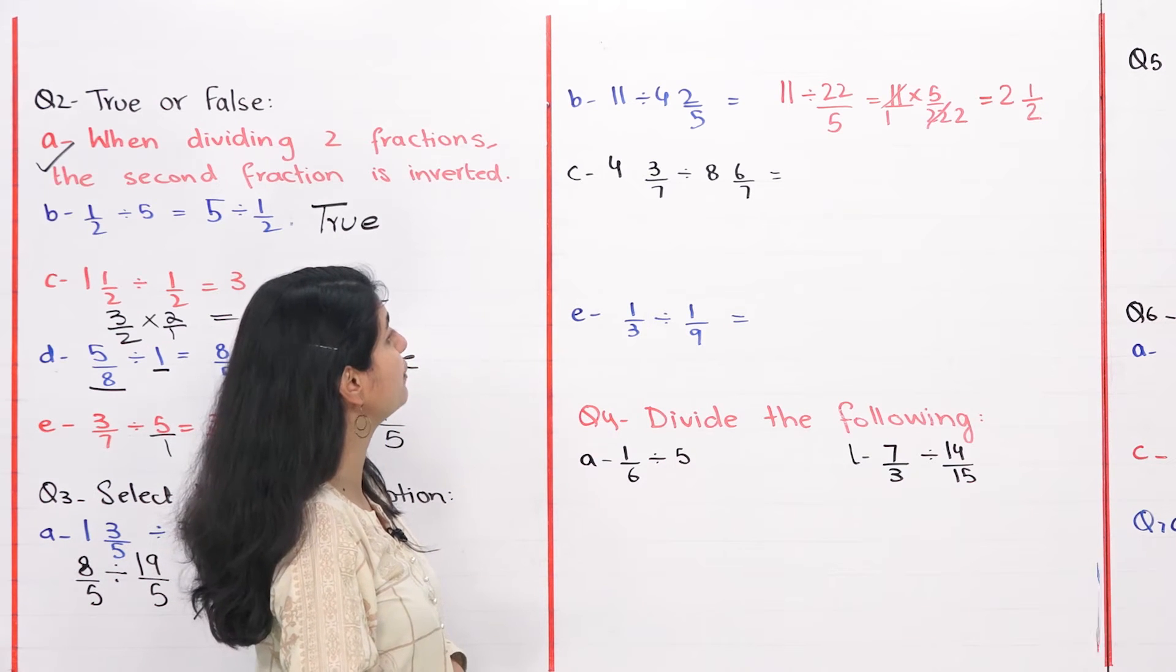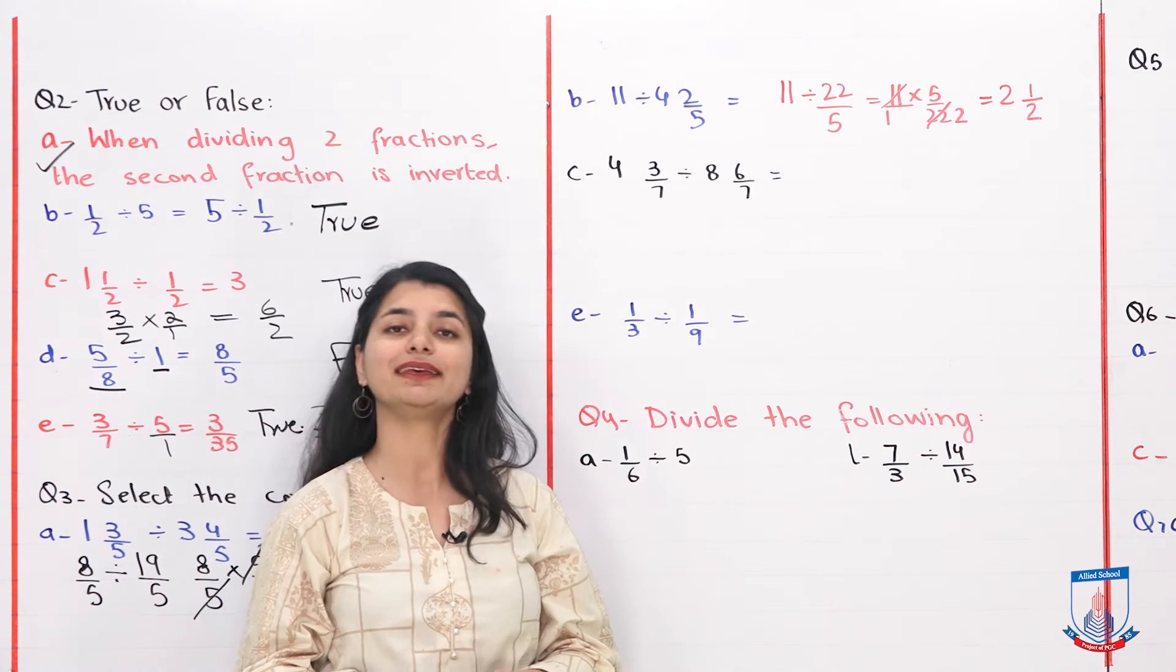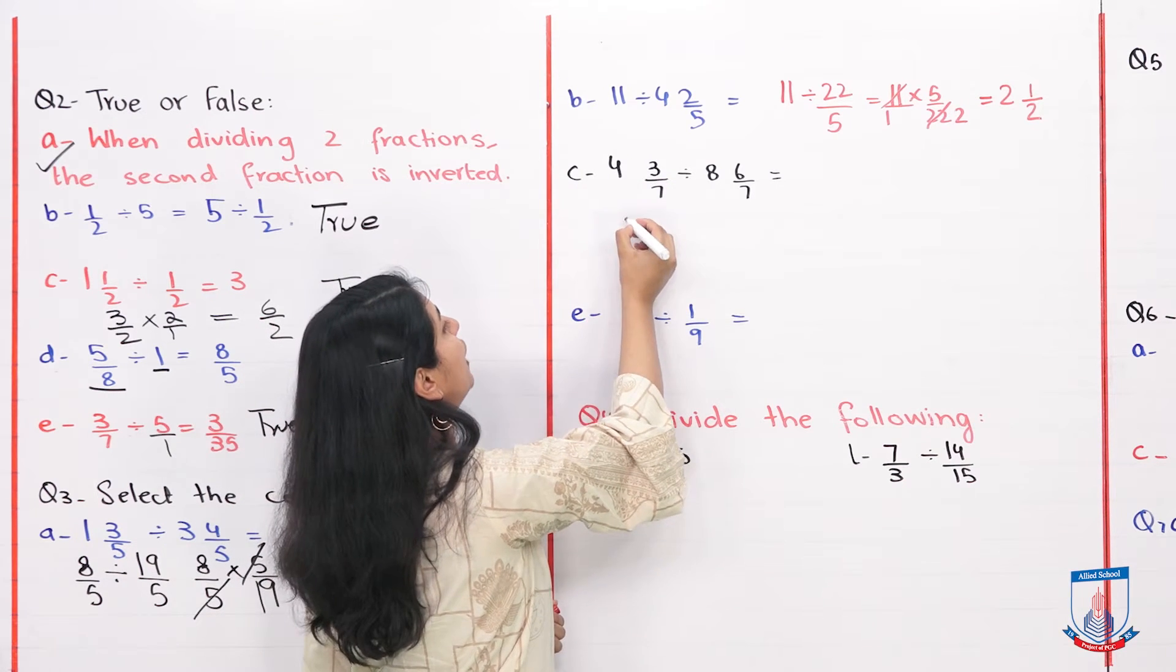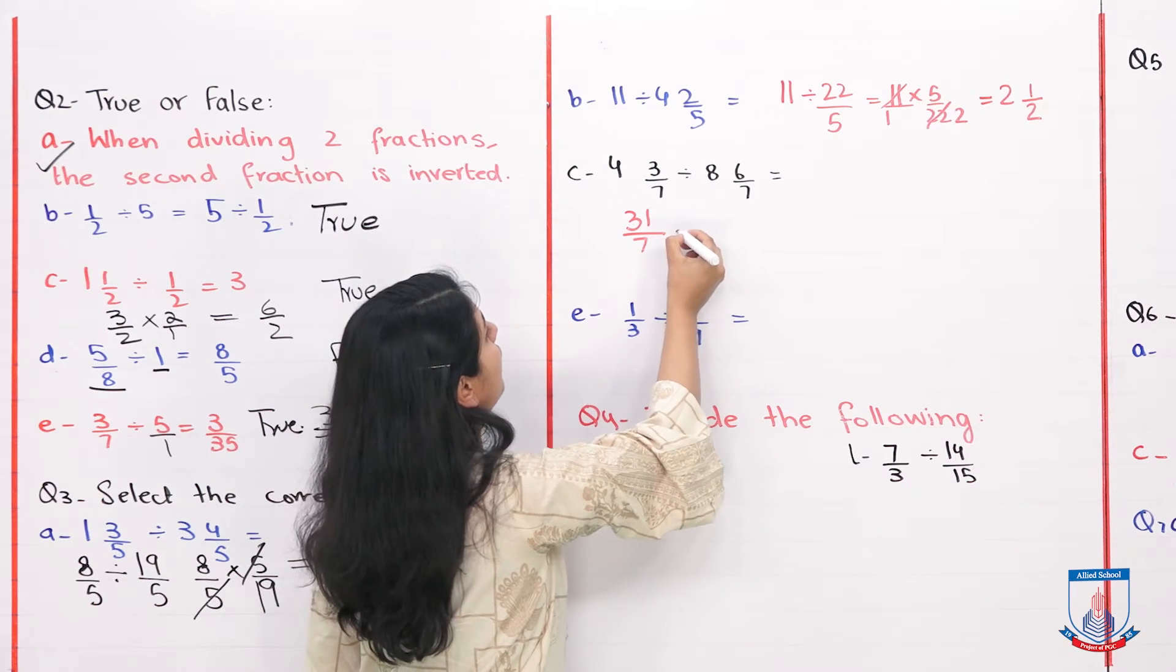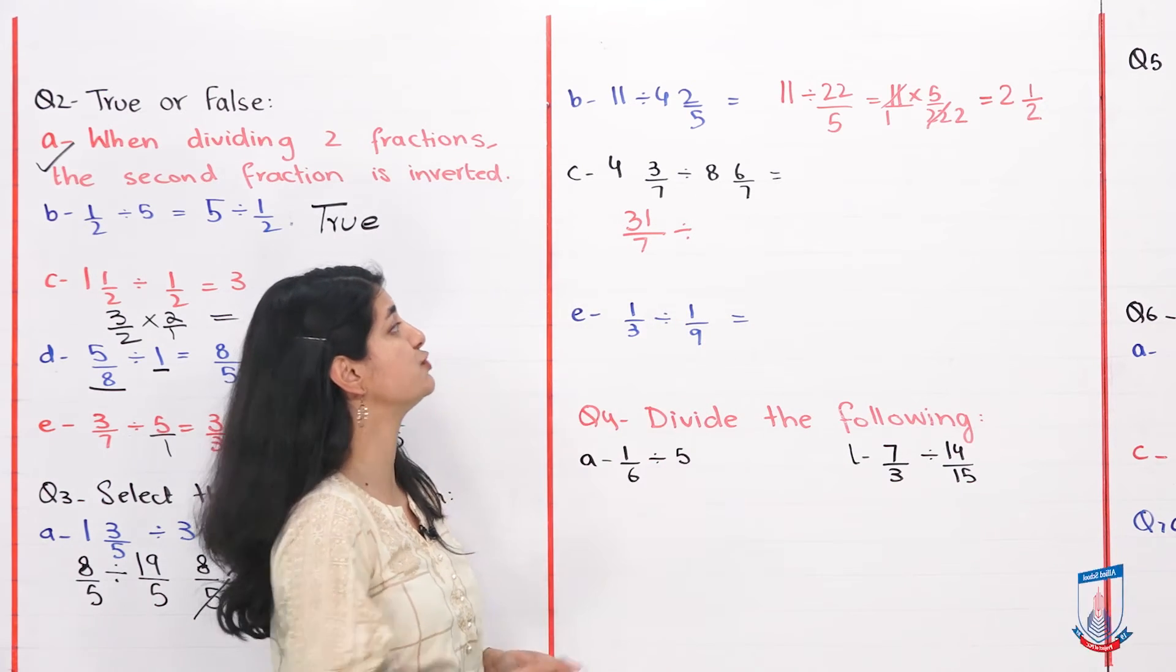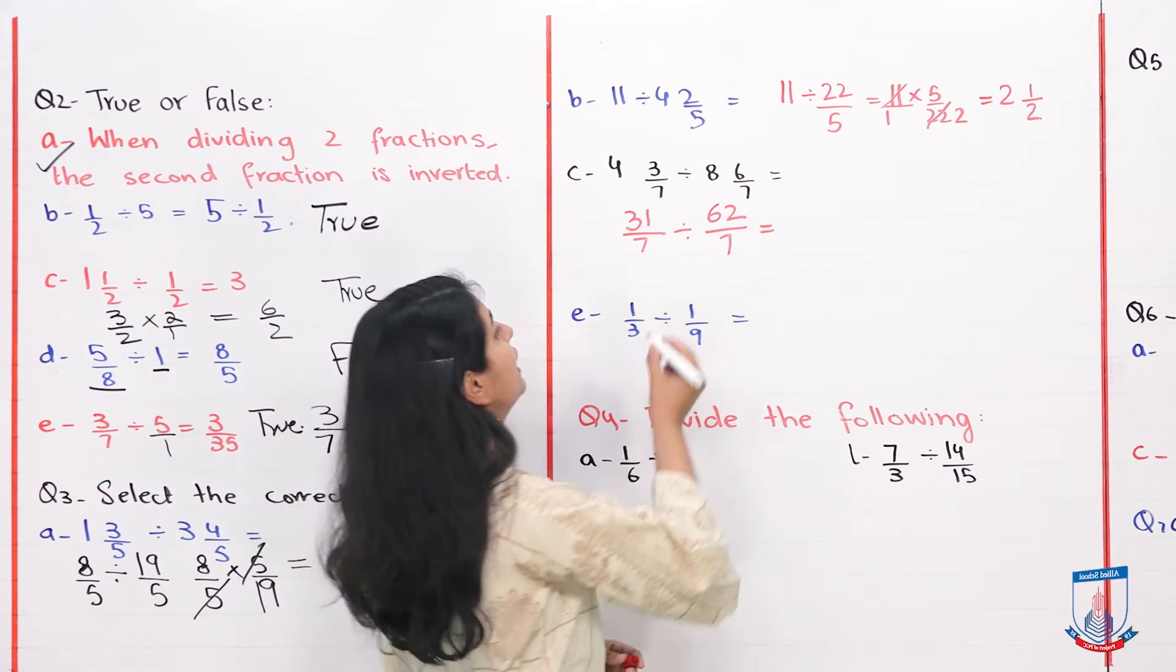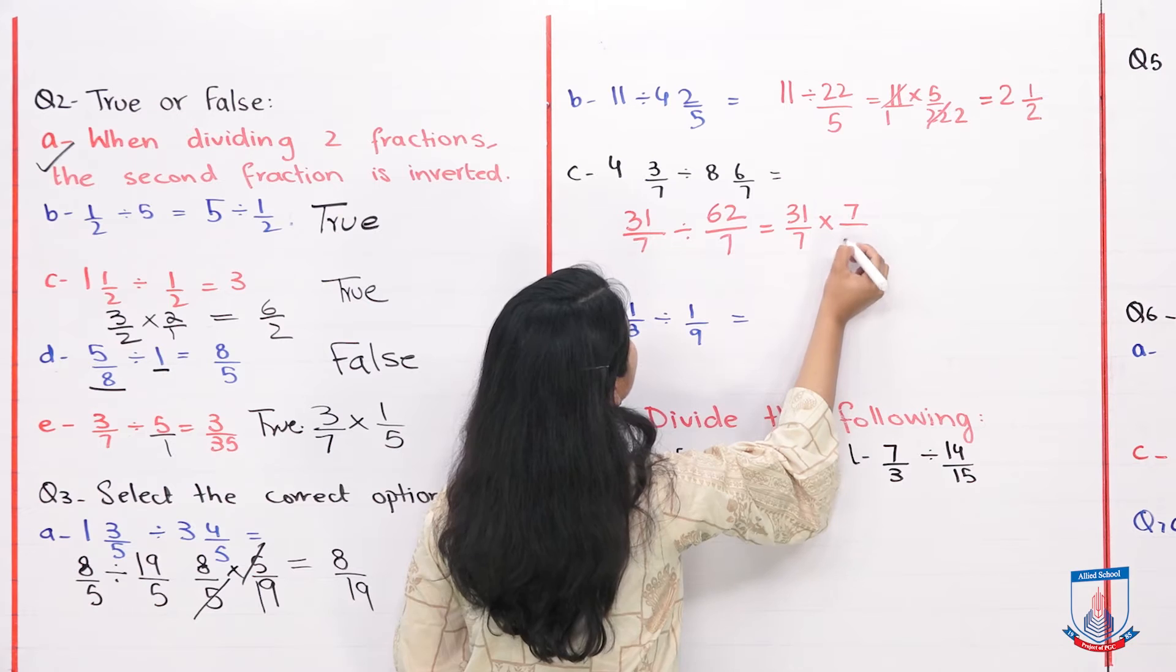Next part is part C: 4 whole 3 by 7 divided by 8 whole 6 by 7. First make improper fractions. 7 into 4 is 28 plus 3, that's 31 over 7, divided by 7 into 8 is 56 plus 6, which is 62 over 7. We take the inverse: 31 over 7 into 7 over 62.